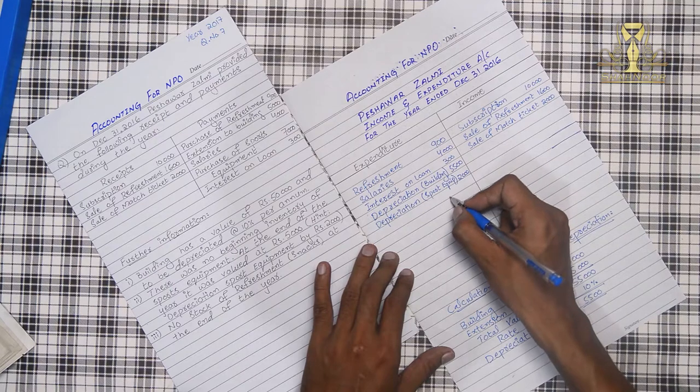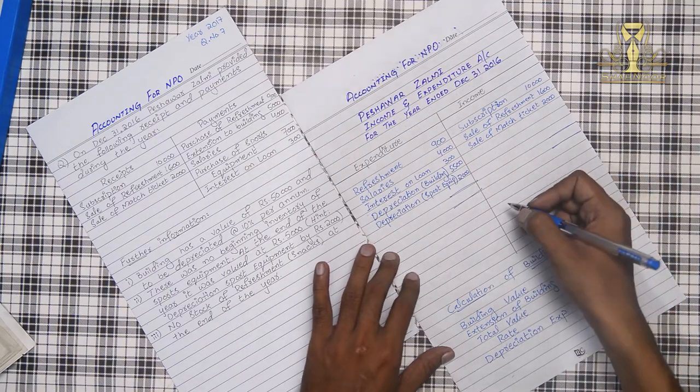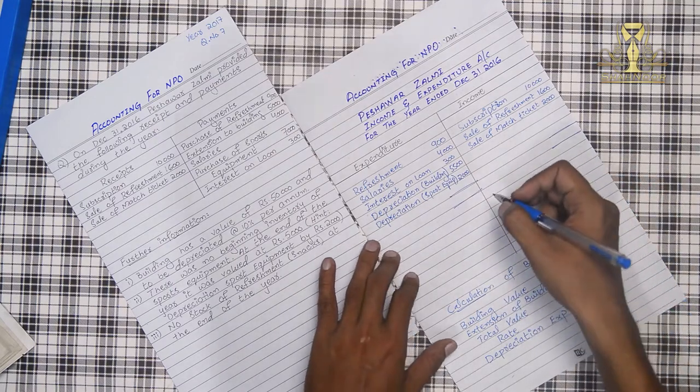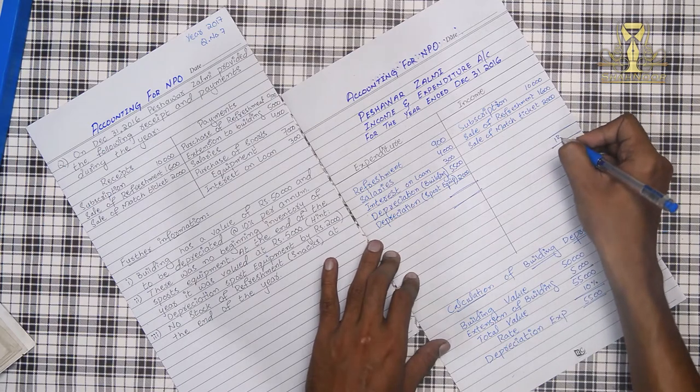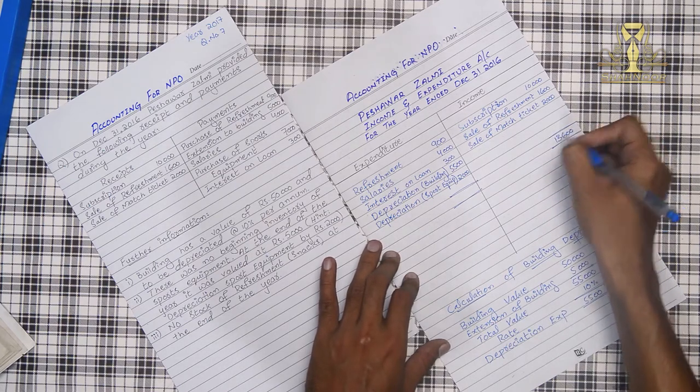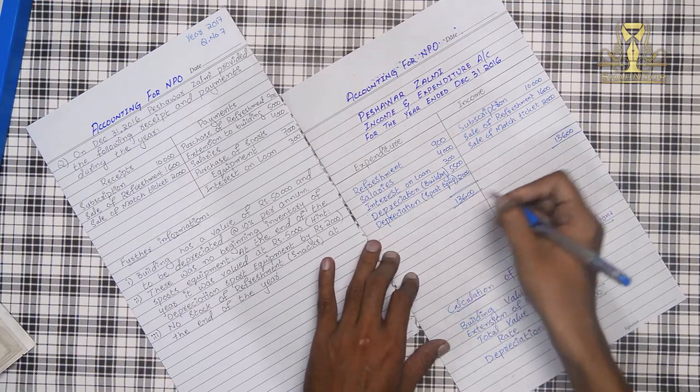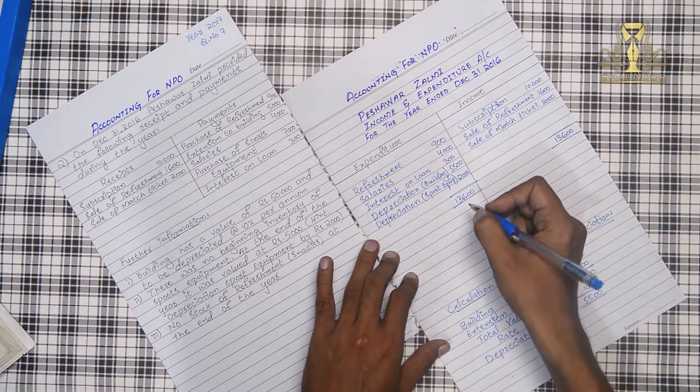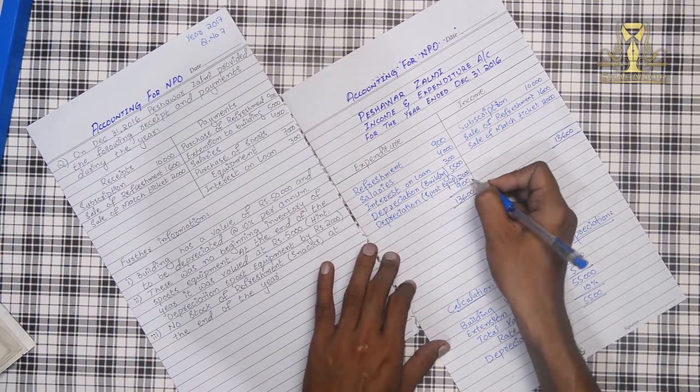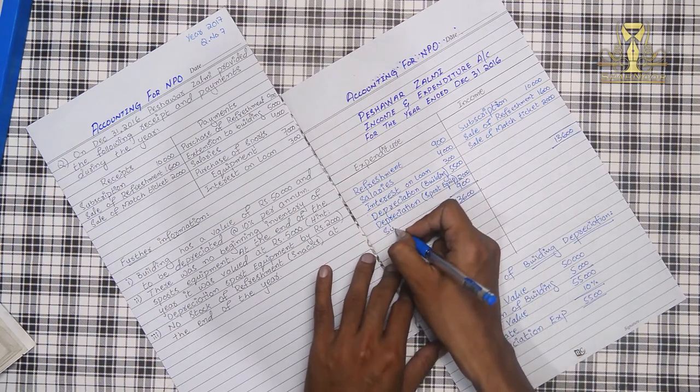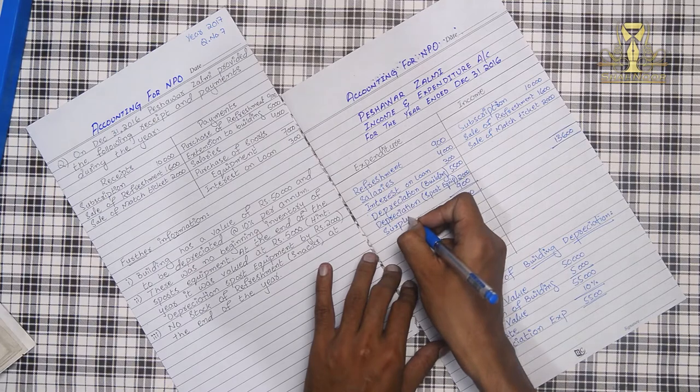Now what will we do? Total like before we did. In both sites we have total highest total is 13,600. And the balance amount is 900 which will be surplus.